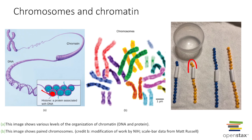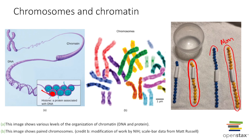Eukaryotic cells are going to have chromosomes. Humans have 46 linear chromosomes — 23 that come from mom and 23 that you inherit from dad.